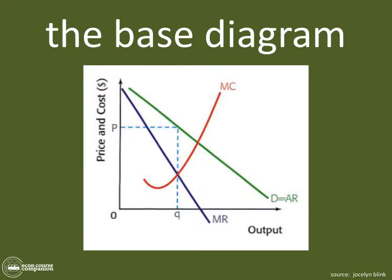Okay, in order to show that, we're going to start in the exact same place that we started with all of the profit diagrams, and that is with the base diagram. What's the base diagram? In Monopoly, it is a diagram that has price and cost on the vertical axis, an origin of zero, an output labeled on the horizontal axis.